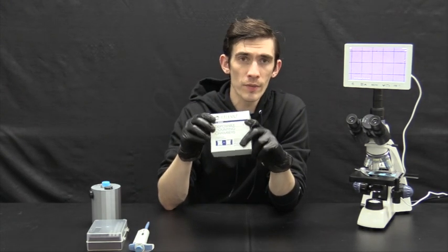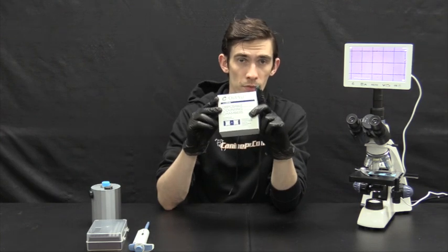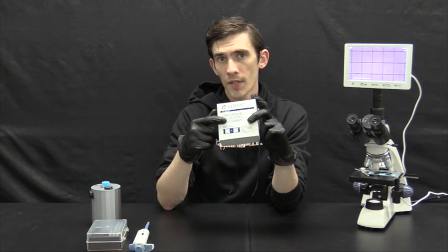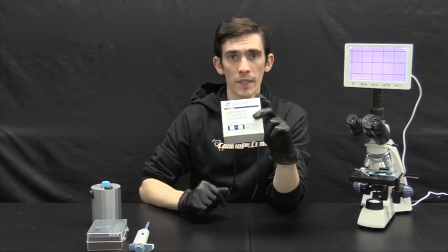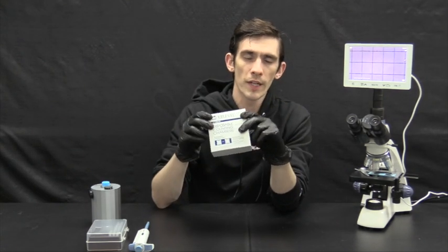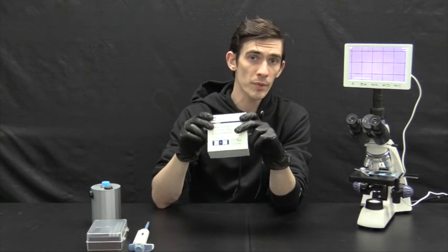So the math is actually so easy that all you do is count up the total sperms observed in 10 of the squares, which we'll show you later in the demo. Divide that number by two and you have your estimation in million per milliliter.